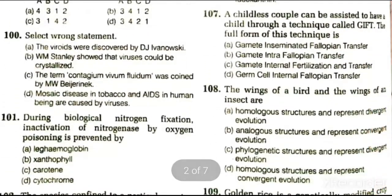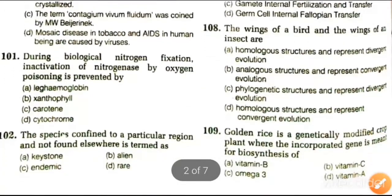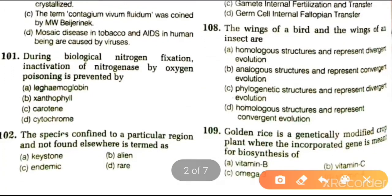Next question: a childless couple can be assisted to have a child through a technique called GIFT. The full form of this technique is: gamete intra-fallopian transfer, gamete inseminated fallopian transfer, gamete internal fertilization and transfer, or germ cell internal fallopian transfer. The answer is gamete intra-fallopian transfer.